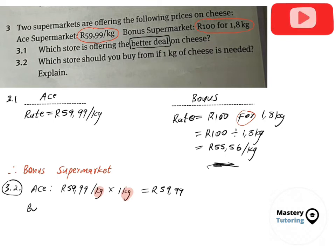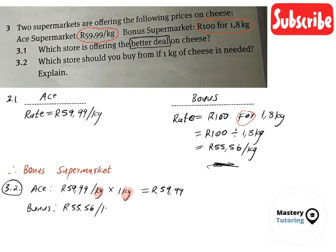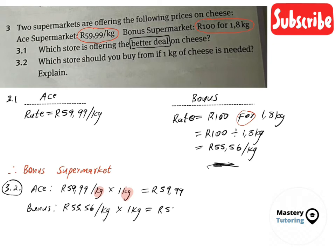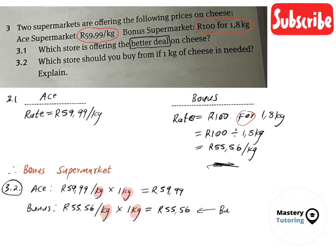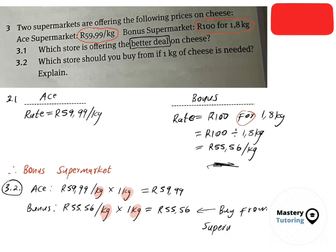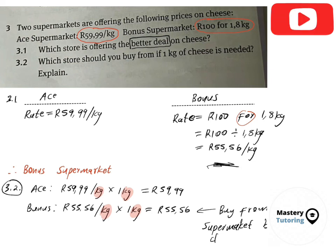For Bonus supermarket, the rate is R55.56 per kg multiplied by 1 kg, which gives R55.56. The kg units cancel, leaving R55.56. Since R55.56 is less than R59.99, you would buy from Bonus supermarket because it is cheaper.